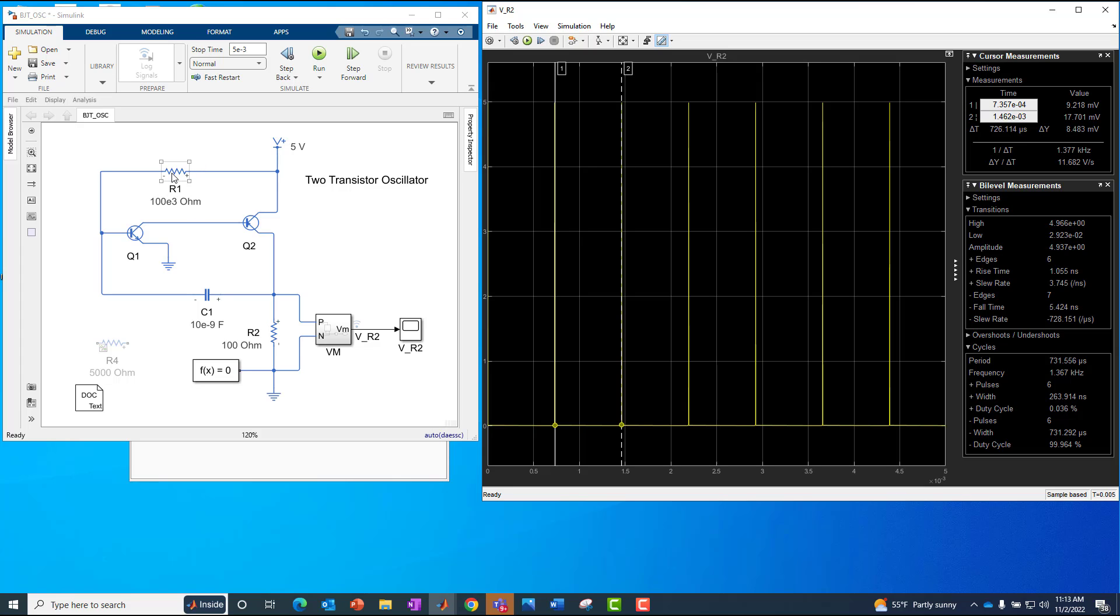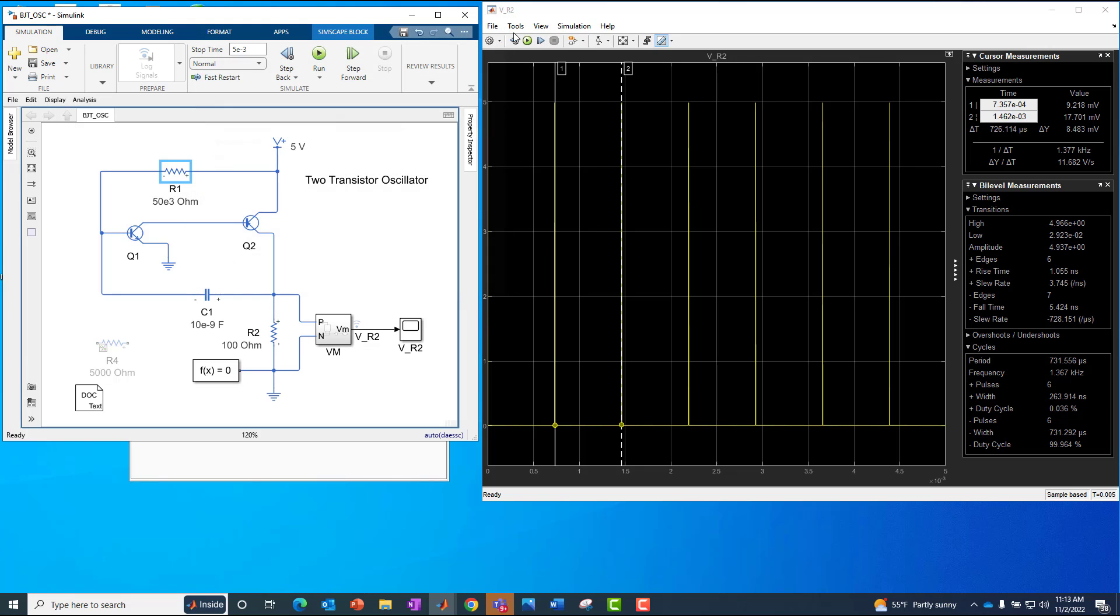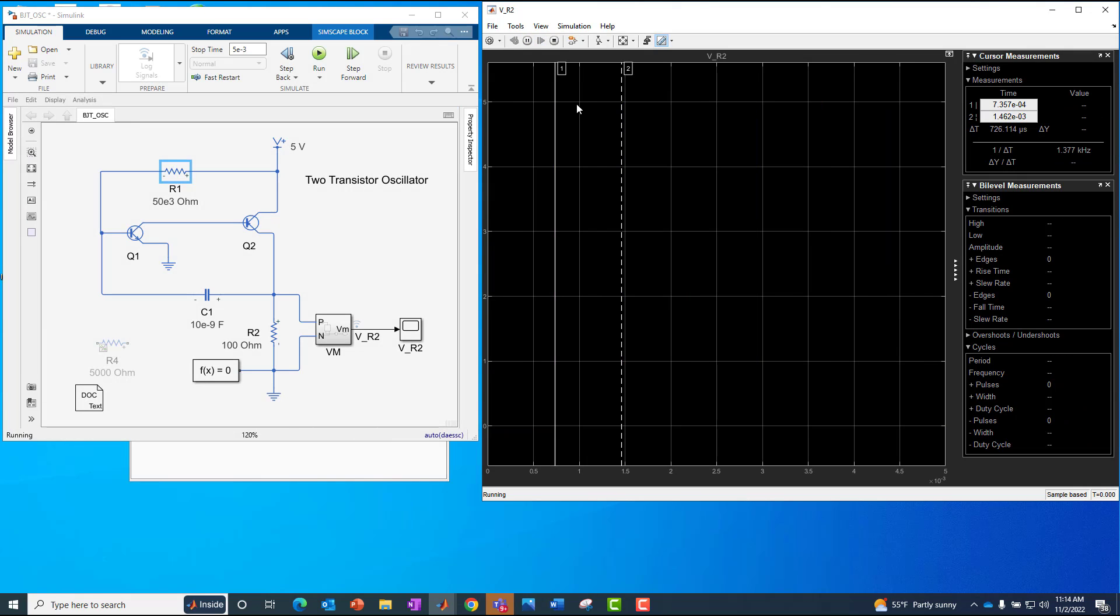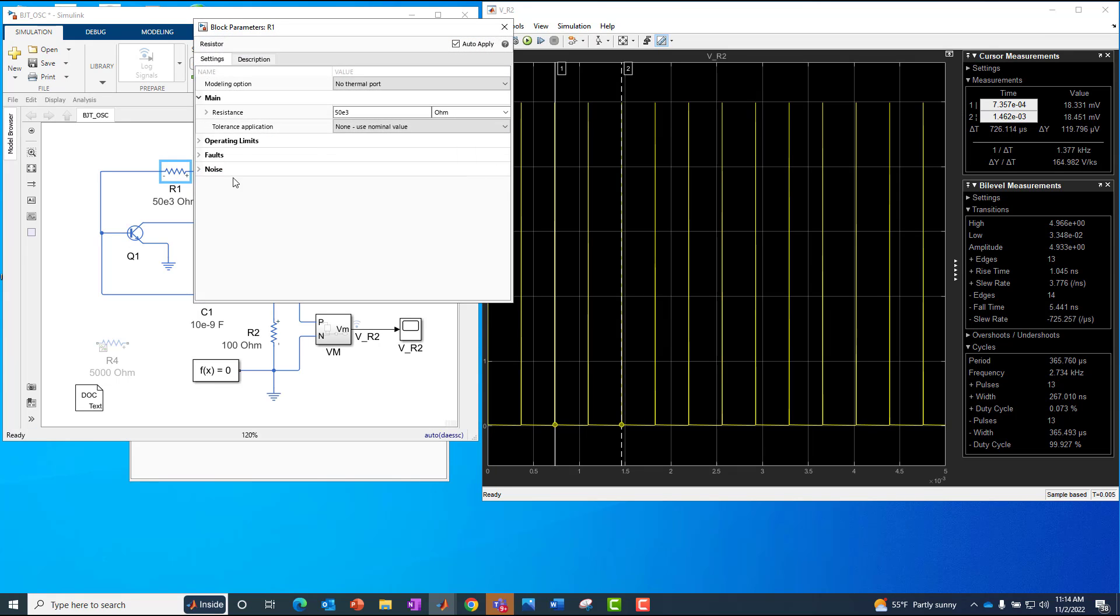And again, we could go in now here and change the frequency by changing, let's say this, and we would make it faster. We can make it 53 and say, okay, that should be about twice as fast. The pulses should occur twice as often. And we run it for five milliseconds. Again, you see they do. Okay. So I'll just change that back. 100E3.